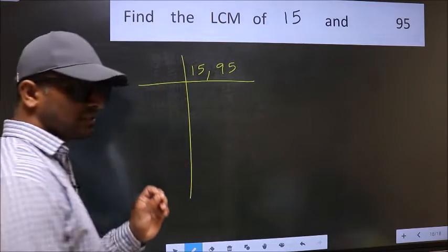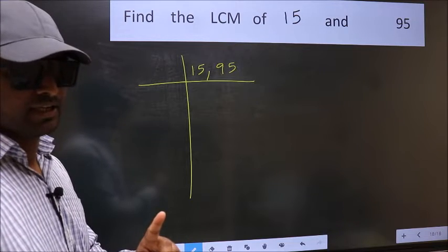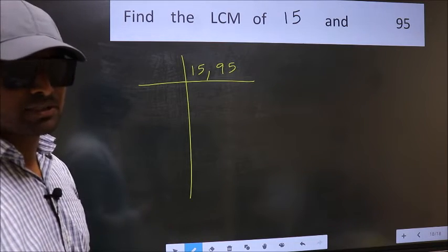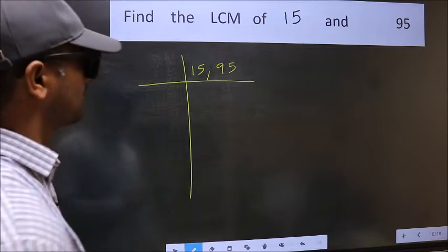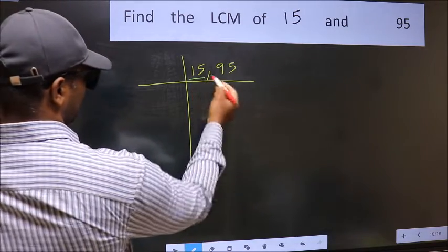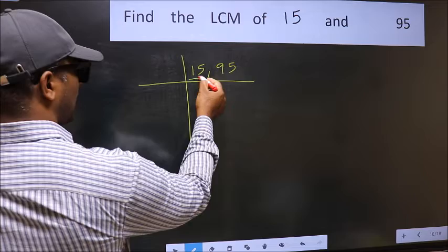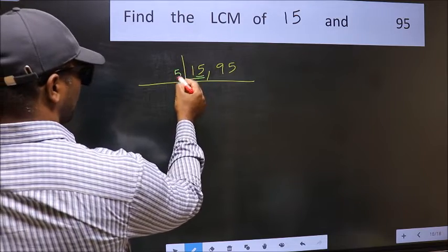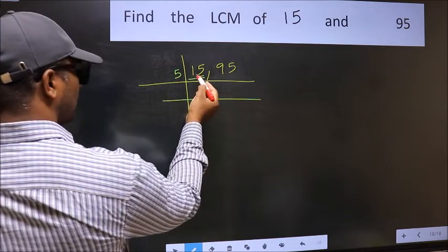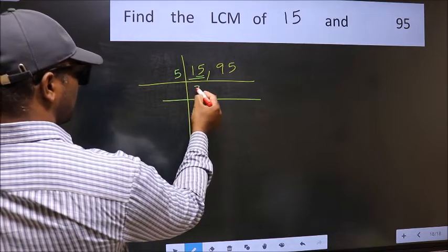This is step 1. Now focus on the first number, which is 15. The last digit is 5, so take 5. When do we get 15 in the 5 table? 5 threes 15.